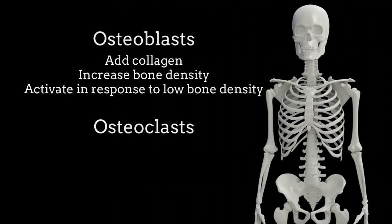Osteoclasts do the opposite of osteoblasts. Osteoclasts are bone breakers, and they work to remove calcium and collagen from our bones when our bodies sense we need more calcium in our blood.